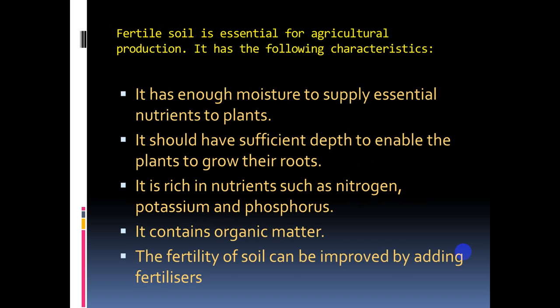Fertile soil is essential for agricultural production. Fertile soil has enough moisture to supply essential nutrients to plants, sufficient depth to enable plants to grow their roots, and is rich in nutrients such as nitrogen, potassium, and phosphorus, which are very essential for plant growth. It also contains organic matter. The fertility of soil can be improved by adding fertilizers when natural fertility is insufficient.